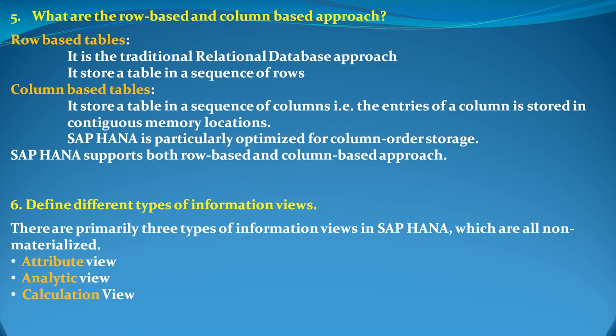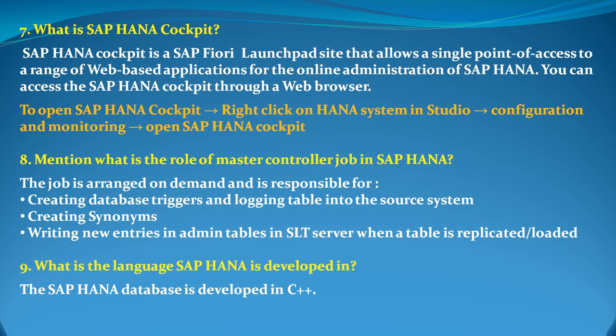The next question is: what are the different types of information views? We have three kinds of views — attribute, analytical, and calculation views — each serving different purposes and having different functionalities altogether.